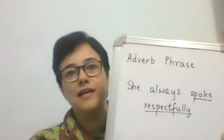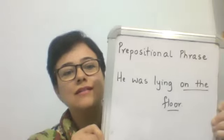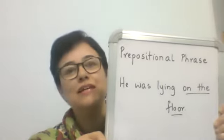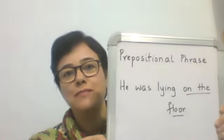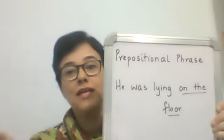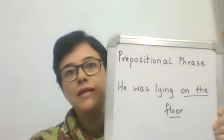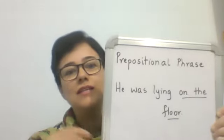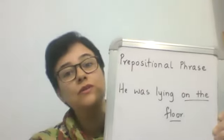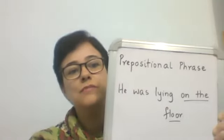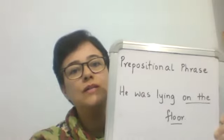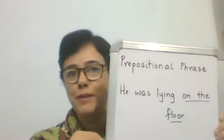The fifth type is a prepositional phrase — it must contain a preposition. A preposition is a word that shows the position of something in relation to something else, like on, between, among, above, below. In the sentence 'He was lying on the floor,' the phrase is 'on the floor.' 'On' is a preposition, and hence 'on the floor' is a prepositional phrase.